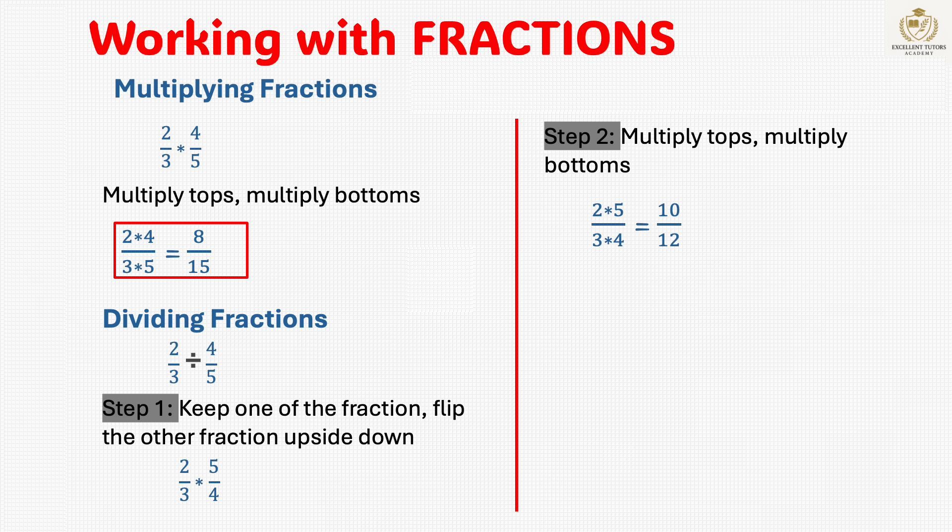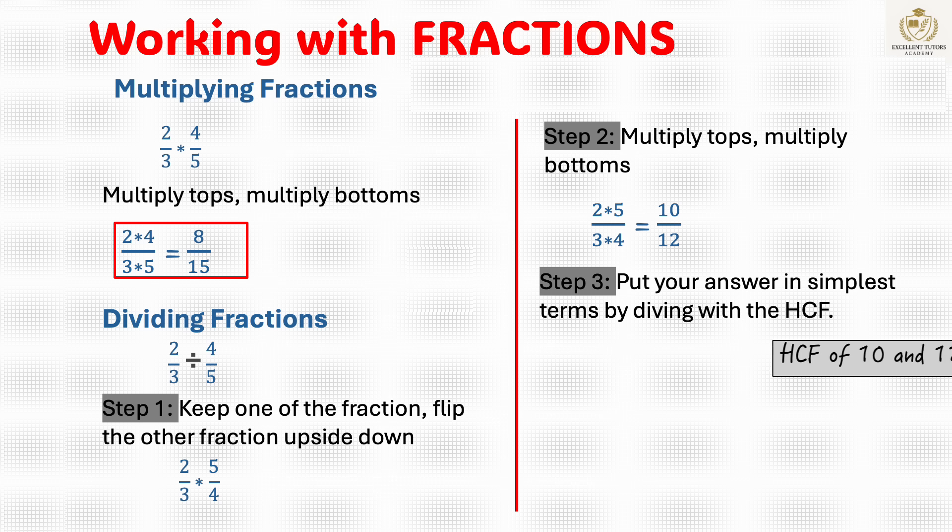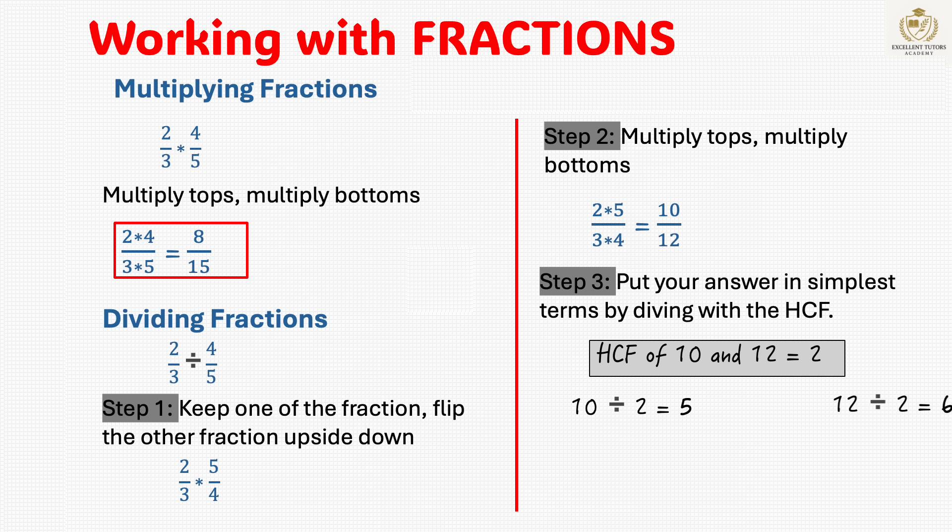2 thirds times 5 fourths equals 10 twelfths. Simplify by dividing with the HCF of 10 and 12. The HCF of 10 and 12 is 2. If you divide top and bottom with 2, you get 5 over 6. Therefore, the answer equals 5 over 6.